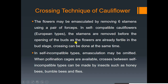The second important method is the crossing technique. First selfing, then crossing. The flowers may be emasculated by removing six stamens using a pair of forceps. In self-notable cauliflowers — the European type — the stamens are removed before the opening of the bud, as the flowers are already fertile at the bud stage.